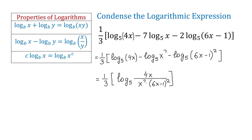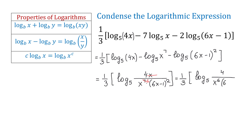Let's simplify this expression by canceling an x from the numerator and denominator. Rewriting, we have 1 over 3 times log base 5 of 4 over x to the 6th power times 6x minus 1 to the 2nd power.